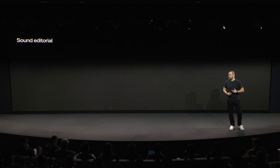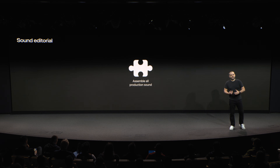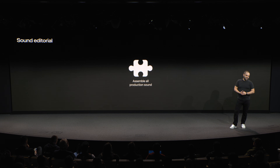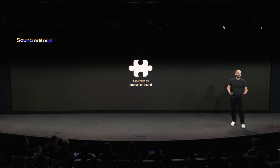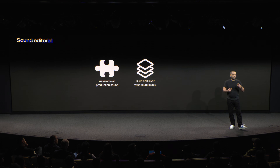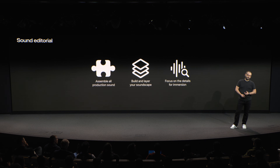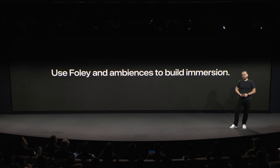So what does my own sound editorial workflow look like? The first thing I always do when starting sound editorial on a new project is to make sure I have all my puzzle pieces ready. Your production team will have hopefully recorded a lot of great sound sources — from multiple spatial mics to individual mono ISOs. So make sure you compile and assemble all of these sources, because your picture editor may not have used them. With everything assembled, you can build your soundscape by editing and layering your dialogue, sound effects, and music. As you do so, remember that immersion is in the details. Use Foley and ambiences to build immersion.